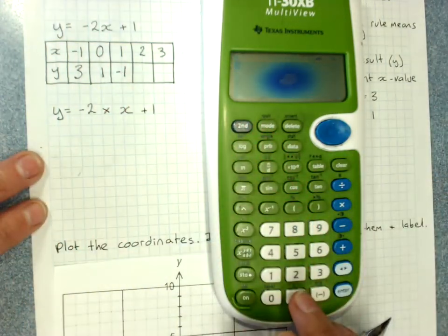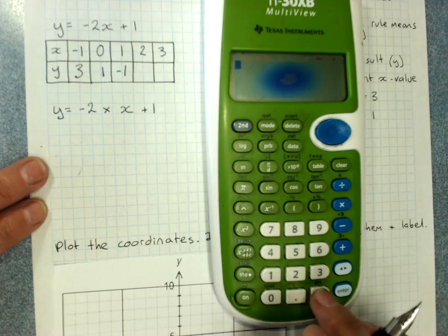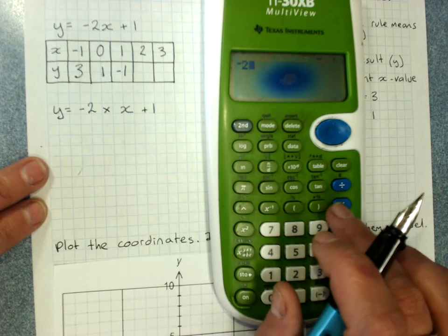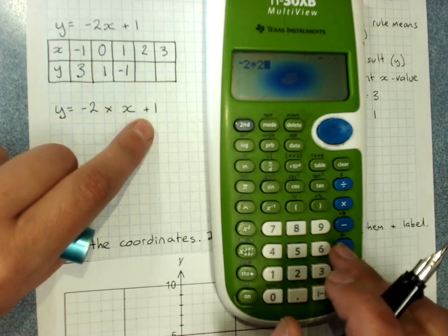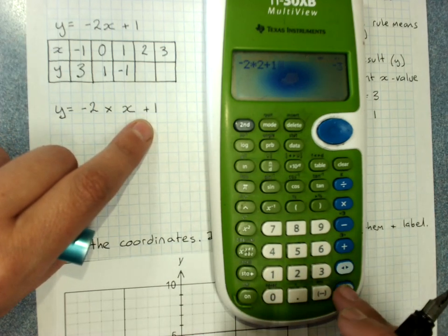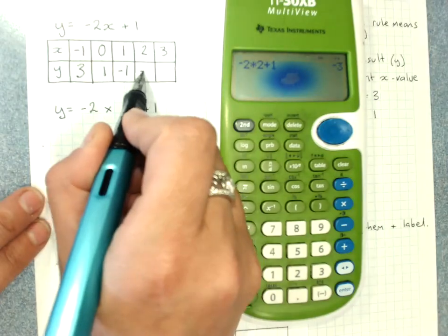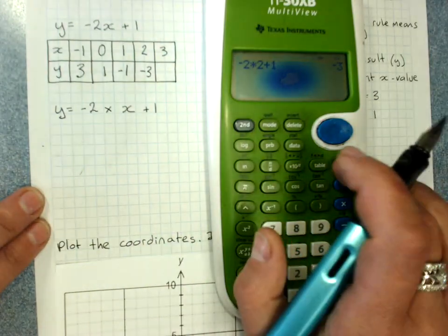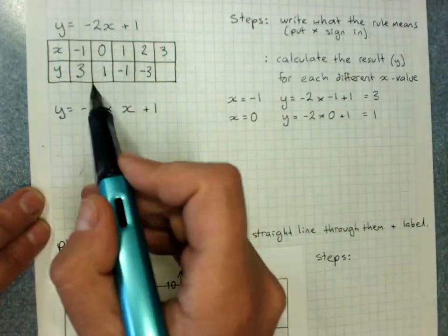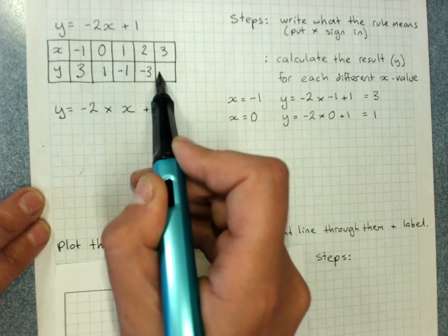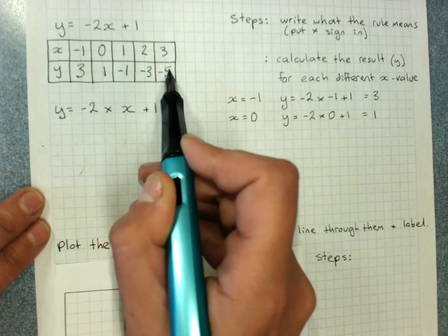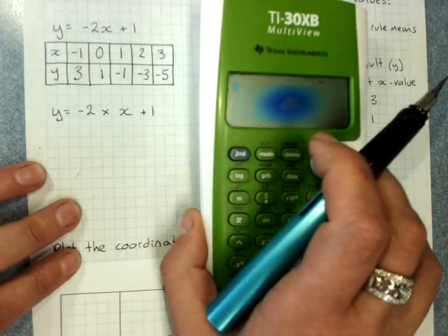The next one, when x is 2, negative 2 times x is 2, plus 1, negative 3. And if we're feeling very clever, we can spot that there's a pattern here where we're going down by 2 each time, and we could predict that that would be negative 5. But if we can't predict it, that's okay.